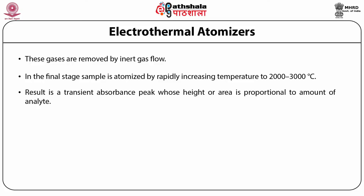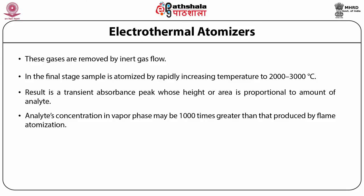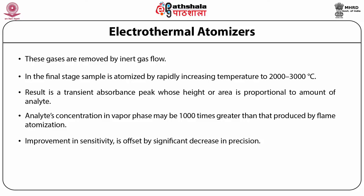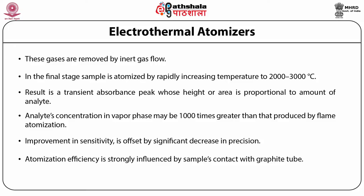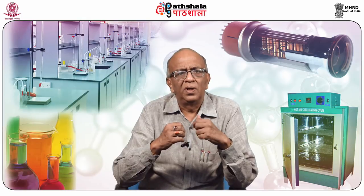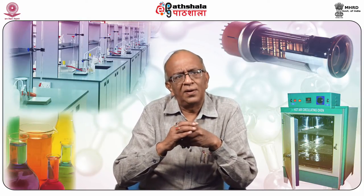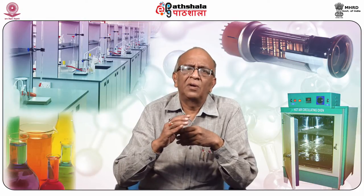Electrothermal atomization provides a significant improvement in sensitivity by trapping the gaseous analyte in the small volume of the graphite tube. The analyte's concentration in the resulting vapor phase may be as much as 1000 times greater than that produced by flame atomization. However, the improvement in sensitivity and detection limit is offset by a significant decrease in precision, because atomization efficiency is strongly influenced by the sample's contact with the graphite tube, which is difficult to control reproducibly.